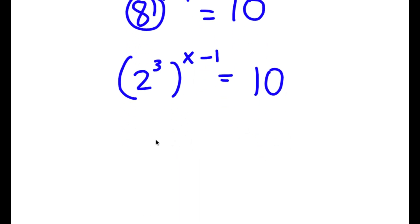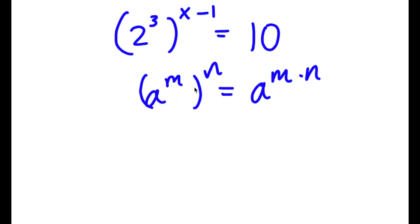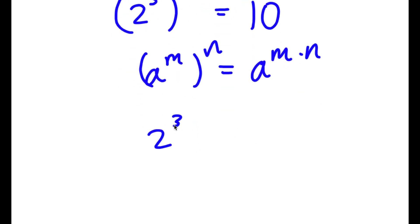If I have something in the form a to the power of m to the power of n, this is equal to a to the power of m times n. So 2 to the power of 3 to the power of x minus 1 is going to equal 2 to the power of 3 times x minus 1.